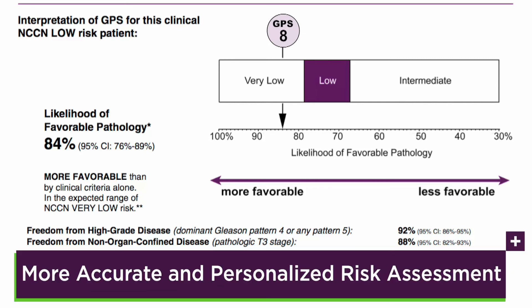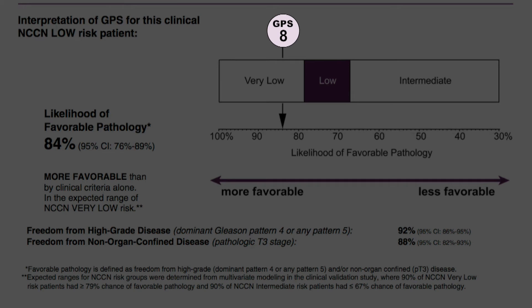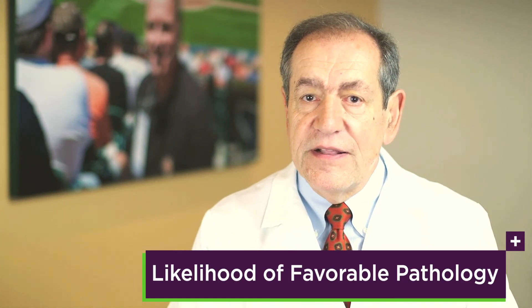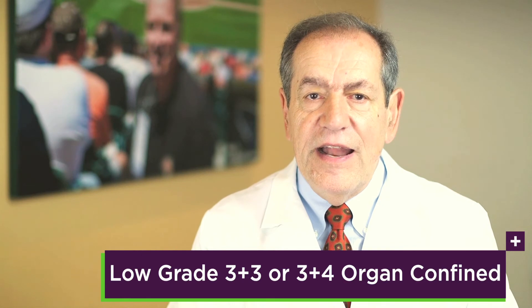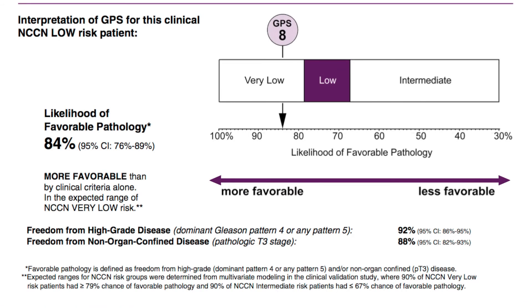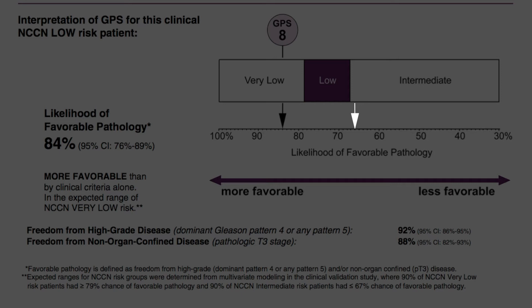With a sophisticated genomic tool like GPS, you can now provide a more accurate and more personalized risk assessment. By incorporating GPS and looking at the biology of the tumor, this report shows that his GPS is 8, which is a low score and indicates more favorable biology. You now have a quantitative percentage of 84 percent — his predicted likelihood of favorable pathology, that is low grade 3+3 or 3+4 organ-confined disease. Looked at another way, he now has a 16 percent chance of adverse pathology — in other words, high grade dominant pattern 4 or any pattern 5 and/or non-organ-confined disease. Prior to GPS, his risk of adverse pathology was estimated to be about 1 in 3. By incorporating the information from GPS, his risk is predicted to be significantly lower and closer to 1 in 6.